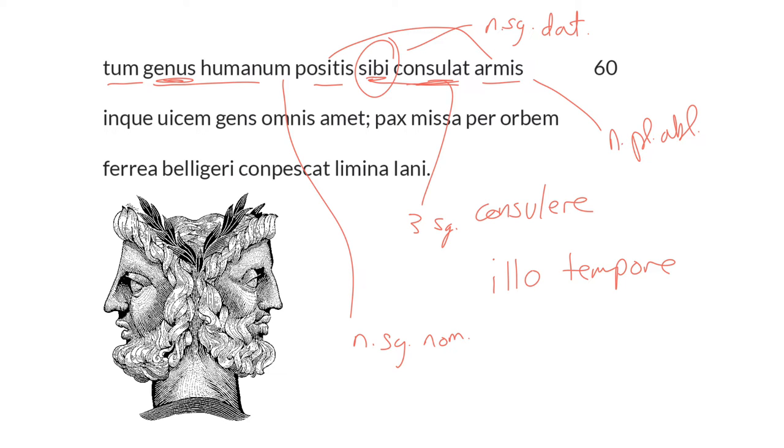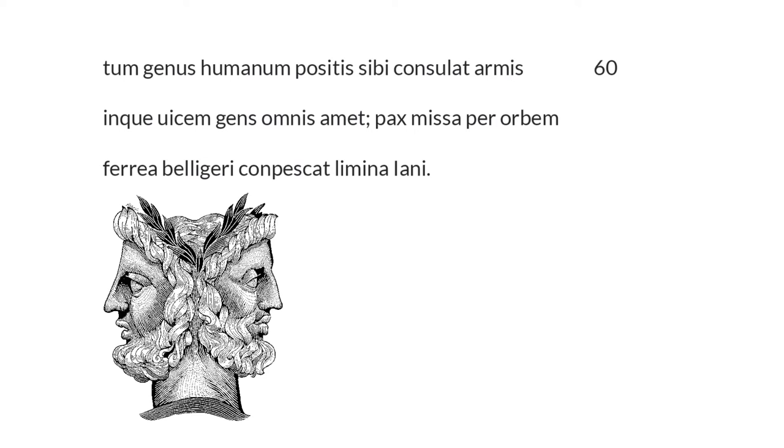And, that's the que, let every nation, gens omnis, let every nation demonstrate love, invicem, mutually. So, gens omnis, feminine singular and nominative, we have then another independent subjunctive, like consulat, namely amet, which is a jussive, or a command. Then let every nation show love toward one another.